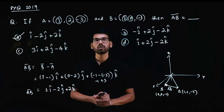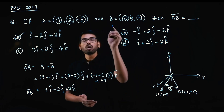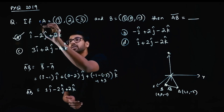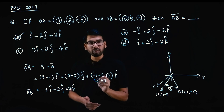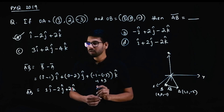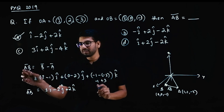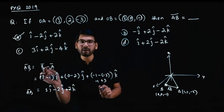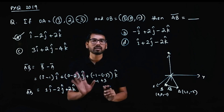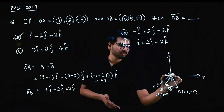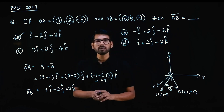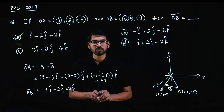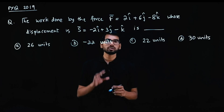You don't have to know the diagram and everything. What you do is: second letter minus first letter for AB vector. Sometimes it's written as OA and OB: AB = OB minus OA, where O is the origin.